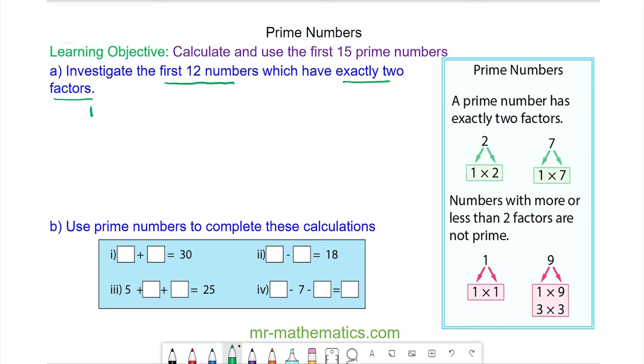We'll begin with the number one. You can see the number one only has one factor which is one multiplied by itself, so one is not a prime number.